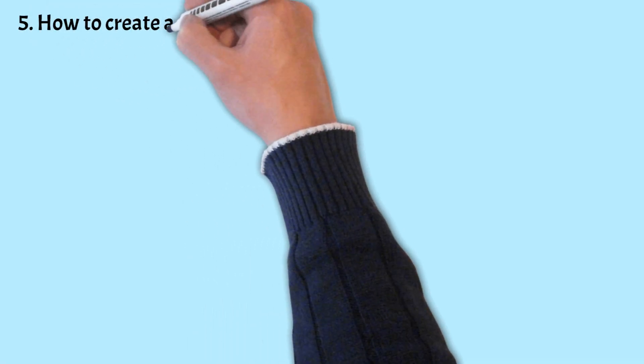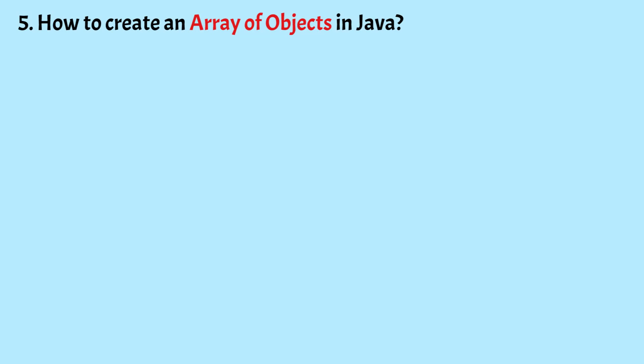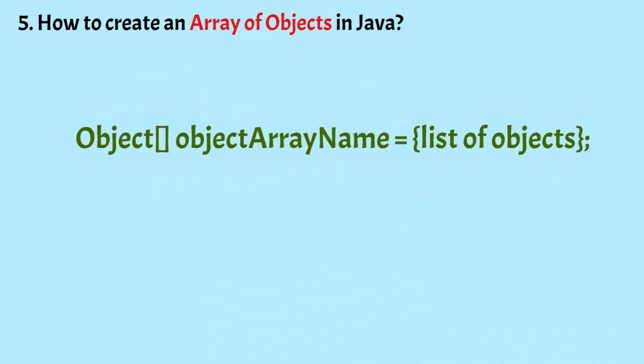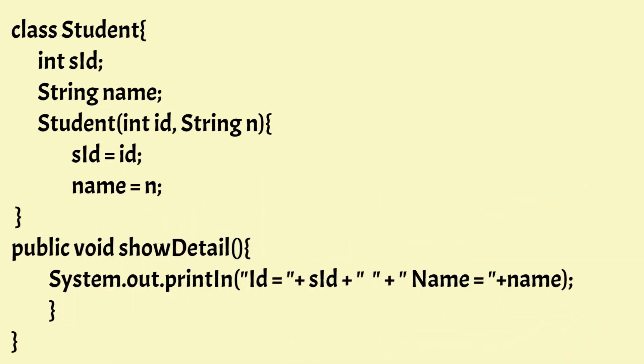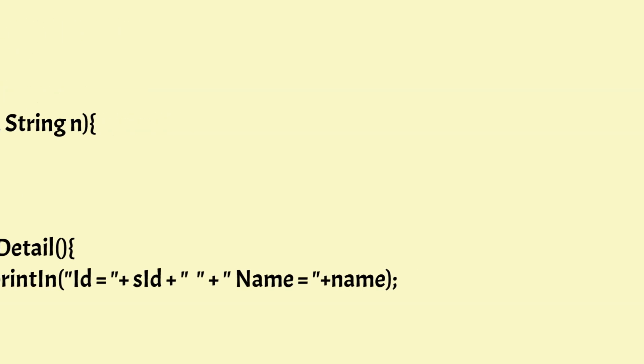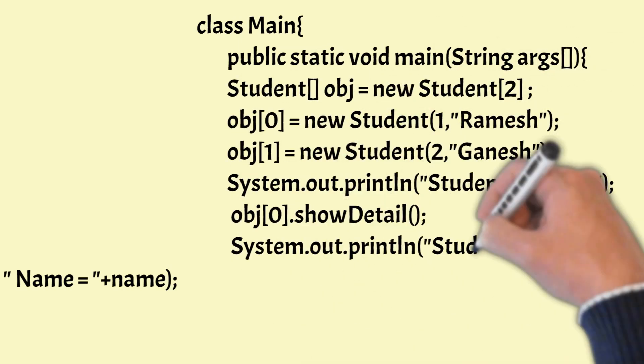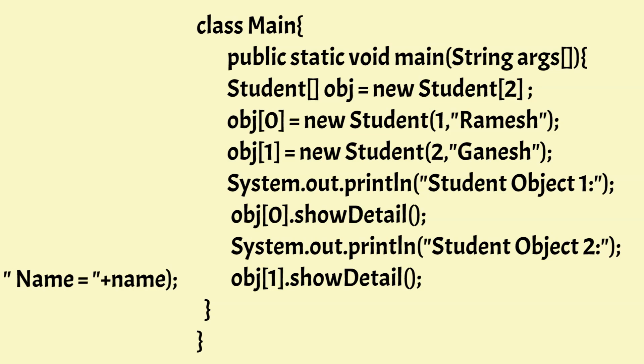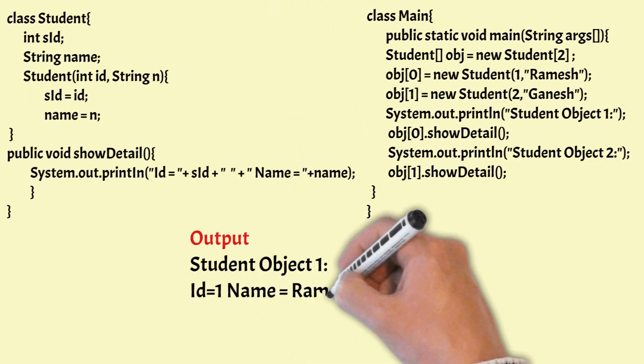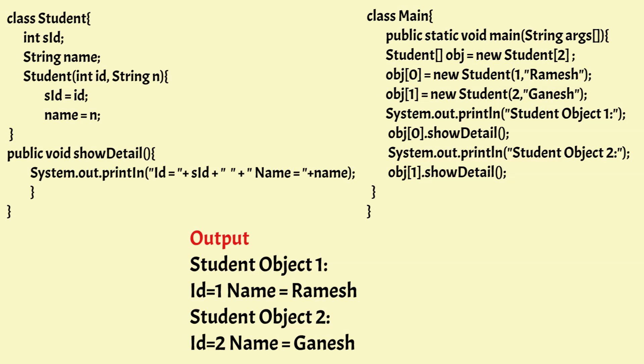How do you create an array of objects in Java? We use a specific syntax for this. In an example program, a class called Student is created with attributes sid and name, initialized via a constructor, and a showDetail method prints the student ID and name. In the main class, an array of Student objects is created, initialized using the constructor, and then the student details are displayed.